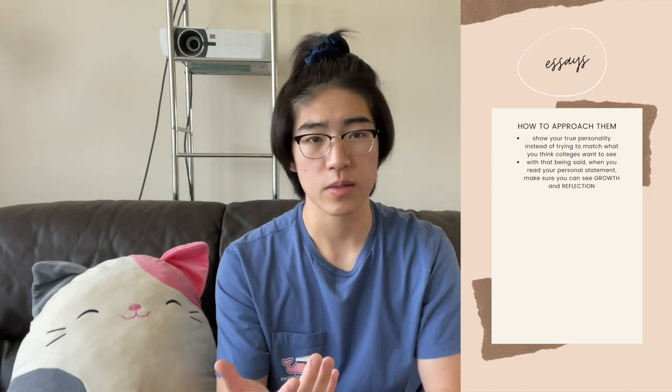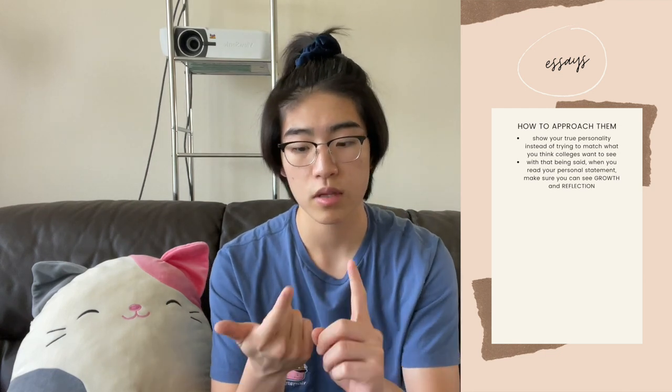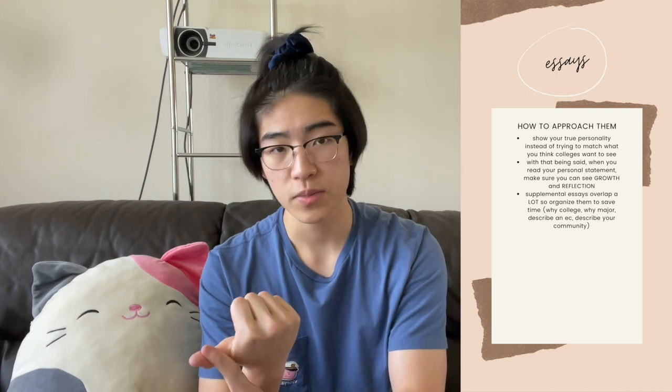If you haven't yet, you should check out my essays video for more specific advice. But some things I'll say here: as cliche as it sounds, make sure that you show your personality. Try to be who you are, rather than who you think colleges want you to be. When you read your personal statement, make sure you can see clear themes of growth and reflection. In addition to the big personal statement, every school has supplemental essays — ranging from about 1 to 11. I applied to about 18 academic colleges so it added up to about 70. Common supplemental topics include: why this major, why this college, how you'll contribute to the community, an extracurricular activity, or community service.